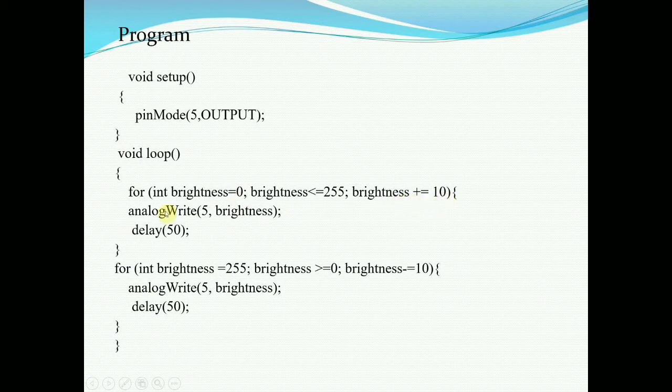I have written the analogWrite function, so analogWrite, pin number I am using pin number 5 as a PWM, and this brightness means this brightness will vary from 0 to 255 in steps of 10. Then I have added some delay, and again I have written a second for loop where I have started from maximum value, that is 255, and then it will go up to 0, and I am decreasing the brightness by 10. Basically, by this program, you will get the fading effect on LED or you can control the brightness. If you want to write the code for LED fading, the same code will work.